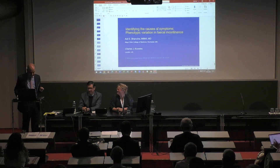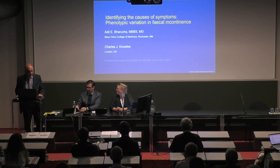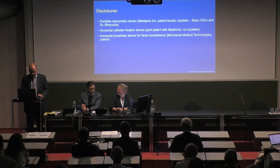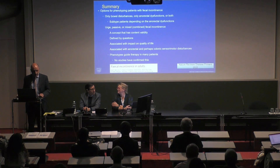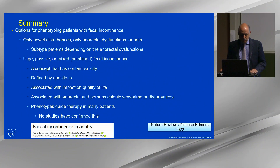Thank you, Rebecca. Thank you, Jose. So we're going to tag-team this presentation. I will provide the perspective of a gastroenterologist, and Dr. Knowles of a colorectal surgeon. My summary is that we have two ways to phenotype patients with faecal incontinence: one based on whether they have bowel disturbances, anorectal dysfunctions, or both. And then one can subtype patients depending on the combination of anorectal dysfunctions. The most widely used system to phenotype patients today is primarily based on symptoms — that is, urge, passive, or mixed fecal incontinence.